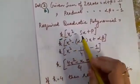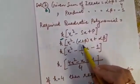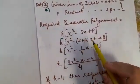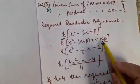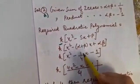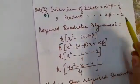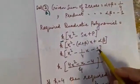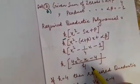So x² minus in place of s I have written sum of the zeros that is alpha plus beta. Here x as it is plus in place of product I have written alpha into beta. Sum of the zero I had 1 by 4. Here I have inserted this value. Product of the zeros I had minus 1 inserted this value.